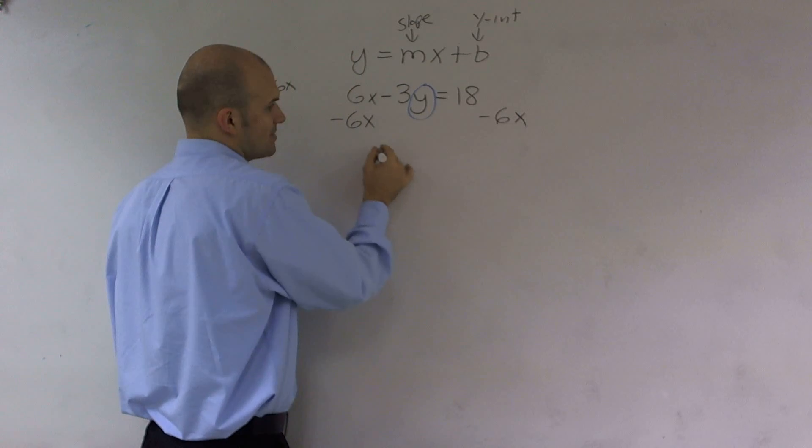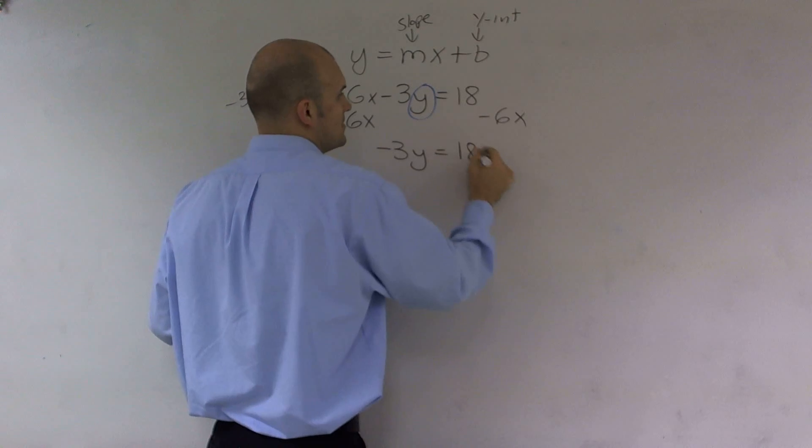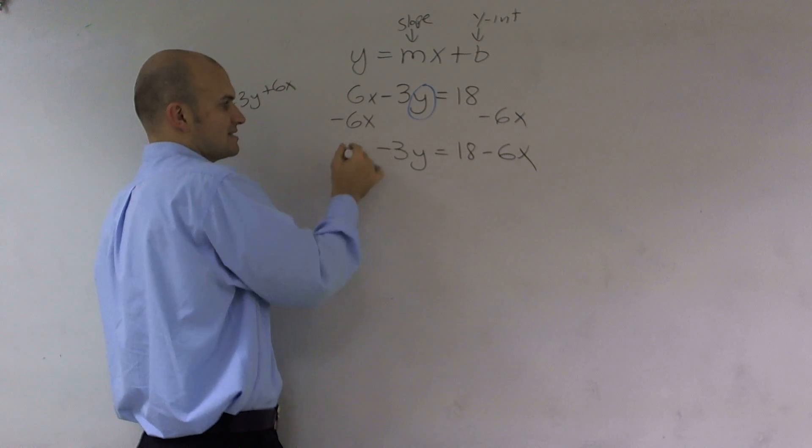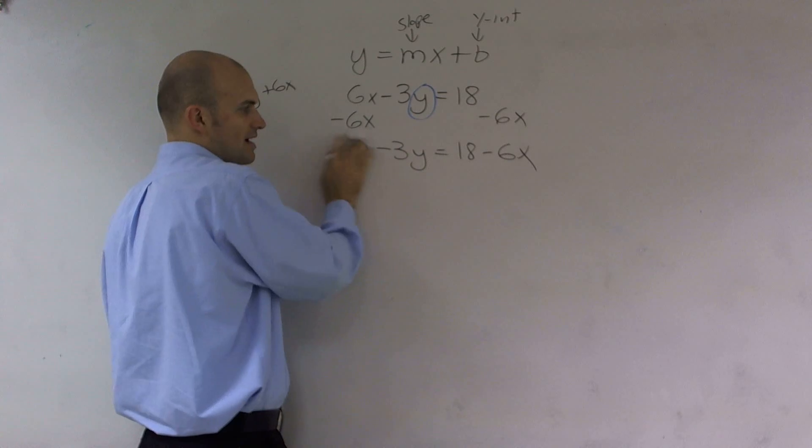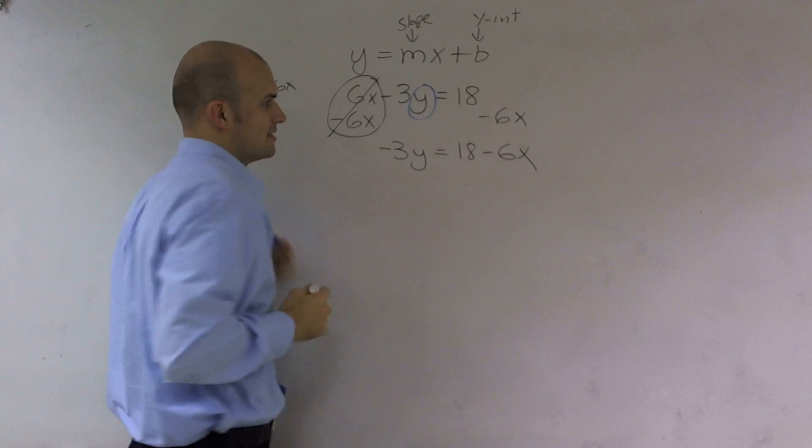Therefore, now I obtain a negative 3y equals 18 minus 6x. All right? Because 6x minus 6x is 0. So we always want to get those to cancel out.